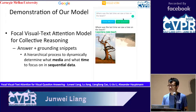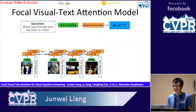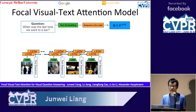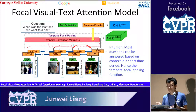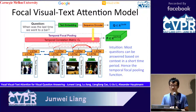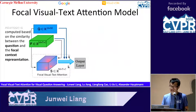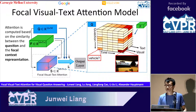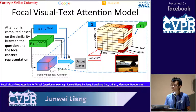Our system utilizes a hierarchical process to dynamically determine what media and what time to focus on in sequential data. Our model first uses LSTM to encode different sequences from different modalities. Based on the intuition that most questions can be answered with context in a short time period, we propose the tempo-focal pooling function to summarize representation at each time step with relevant information in a small tempo window, producing the focal context representation — denoted as the F tensor. Attention is then computed based on the similarity between the question and the focal context representation. For example, the word 'vehicle' in the question is correlated with the image containing a vehicle in the attention tensor, allowing the system to focus on relevant information to answer the question.